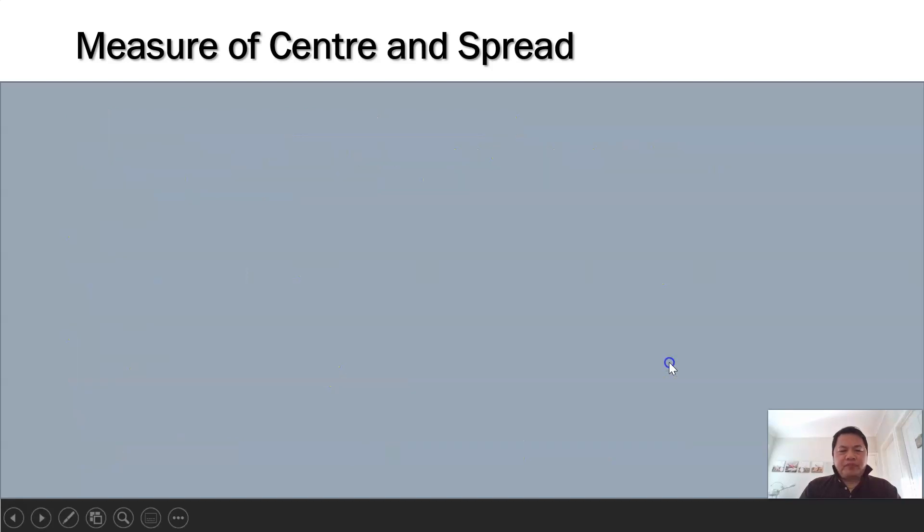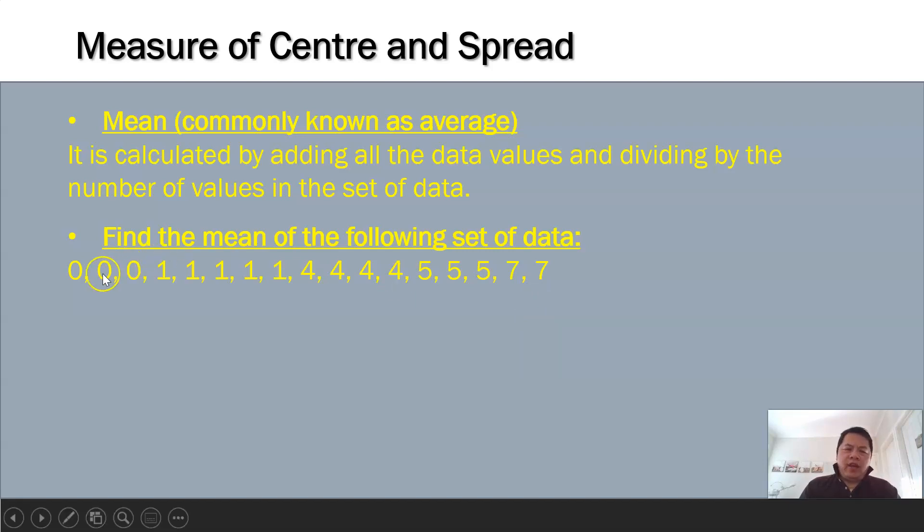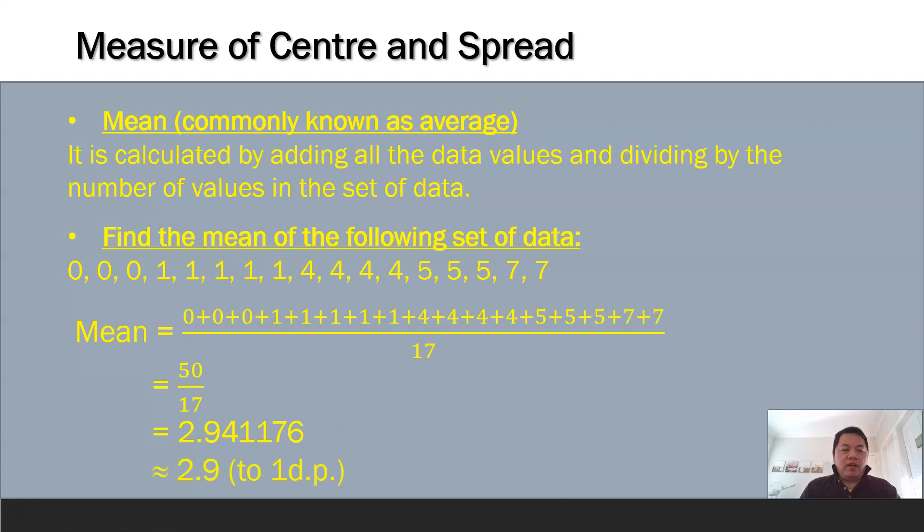Mean, known as average. Let's say you're given a set of data like this. You've got to add up all the numbers divided by the number of sets of data we have: 1, 2, 3, 4, 5, 6, 7, 8, 9, 10, 11, 12, 13, 14, 15, 16, 17. There are 17 numbers here, so you add them up and divide by 17. You get a decimal, and normally we'll tell you to leave the answer to one decimal point or two decimal points. For this case, if I request you leave it to one decimal place, you get 2.9. Remember the wavy line indicates estimation, and you've got to put a bracket to one decimal point.